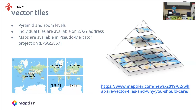There is one tile at zoom zero, which is split into four tiles at zoom level one. Each of those tiles is again split into four tiles at the next zoom level, and so on. These tiles are available on the ZXY address, where Z stands for the zoom level, and X and Y stand for the row and column.